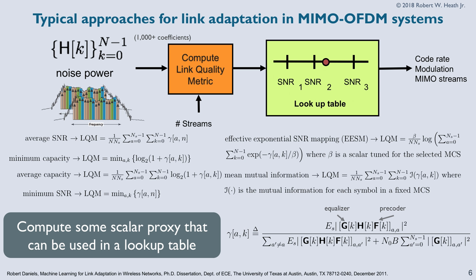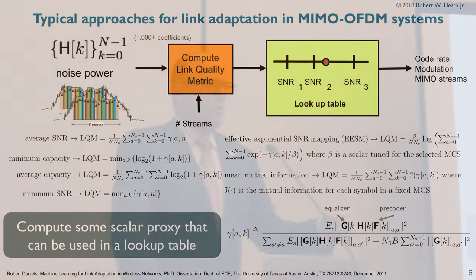There are various metrics. In MIMO, typically the SNR is a post-processing SINR — per stream, after pre-coding and equalization. You get an SNR per stream per subcarrier. Metrics include average SNR, minimum capacity, average capacity, and minimum SNR. The ones used most in industry are either effective exponential SNR mapping (EESM) or mean mutual information. Mean mutual information is probably the most common — you sum a bunch of log(1 + SNR) terms and find an equivalent single SNR value. Basically, you end up with a one-dimensional proxy that goes into a lookup table that outputs the rate.